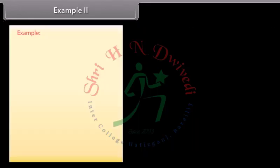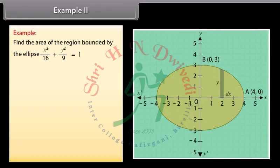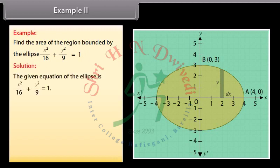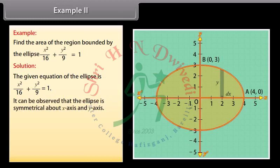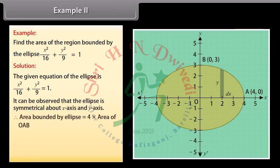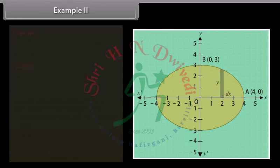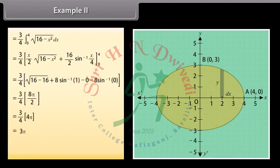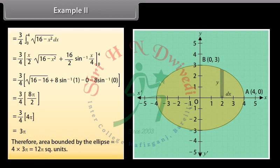Example 2: Find the area of the region bounded by the ellipse x²/16 + y²/9 = 1. Solution: The given ellipse x²/16 + y²/9 = 1 is symmetrical about both the x-axis and y-axis. Therefore, area bounded by the ellipse = 4 × area of OAB. Area of OAB = ∫[0 to 4] y dx. By solving, area of OAB = 3π. Therefore, area bounded by the ellipse = 4 × 3π = 12π square units.